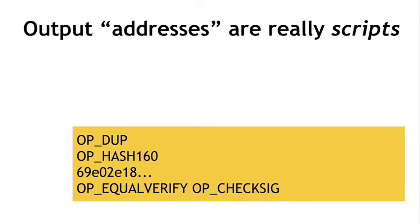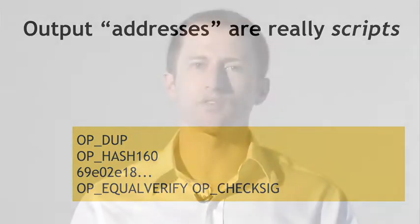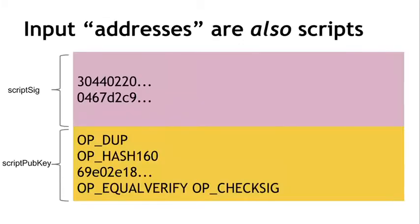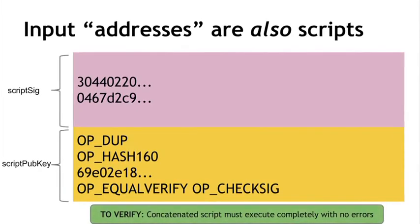The secret is that the input address is also a script. So that's a bit of script that you combine with the output address. You simply concatenate them. And that gets you one script that has to run successfully in order to claim a Bitcoin. So traditionally, these two scripts are called scriptSig and scriptPubKey. And that's because in the simplest case, the output script just specifies a public key. And the input script specifies a signature with that public key.